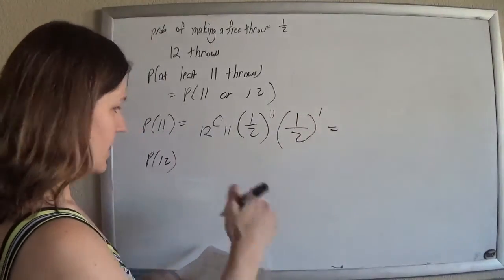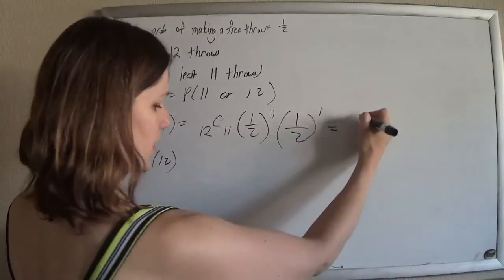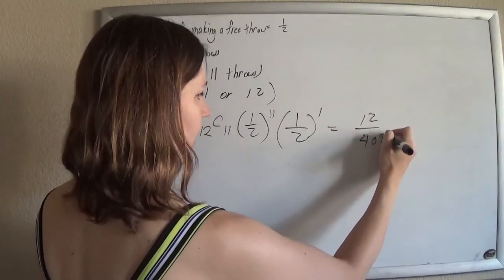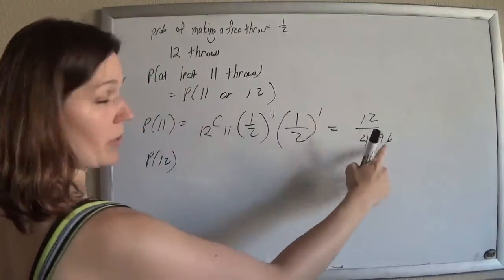So if you do that, this is 12, so it's 12 out of 4,096. So 2 to the 11th times 2 to the 1st gives you that.